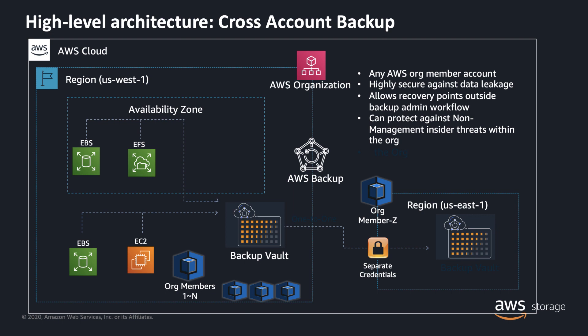Here is a high-level architecture of Cross-Account Backup. As you can see here, we have an individual member account that is part of an AWS organization and it has resources such as EBS and EFS that need to be copied over to a different member account in a different region. With the Cross-Account backup feature, we can now copy backups from the vault in the source account to a destination vault in the destination account, whether in the same region or a different region.